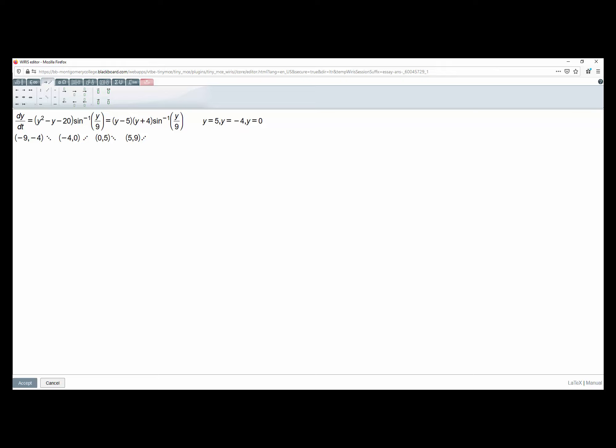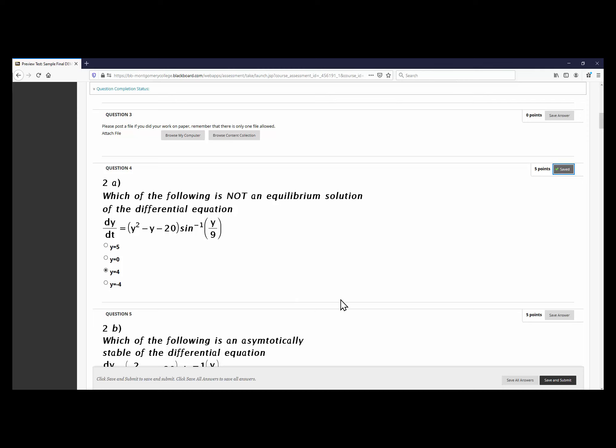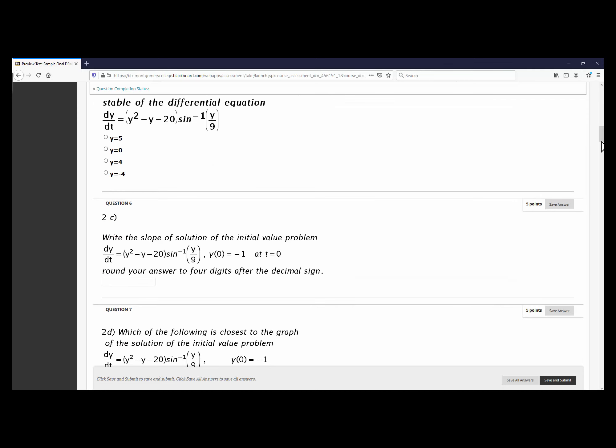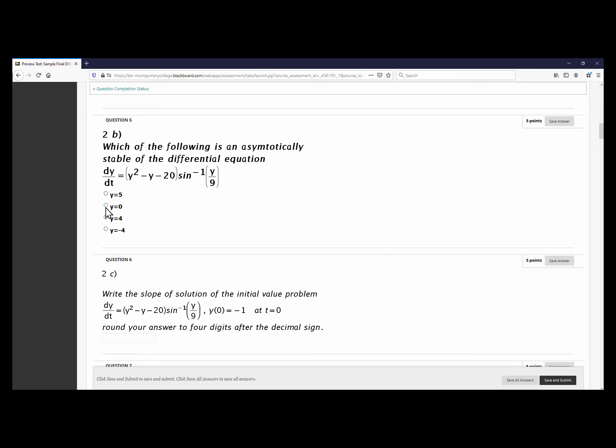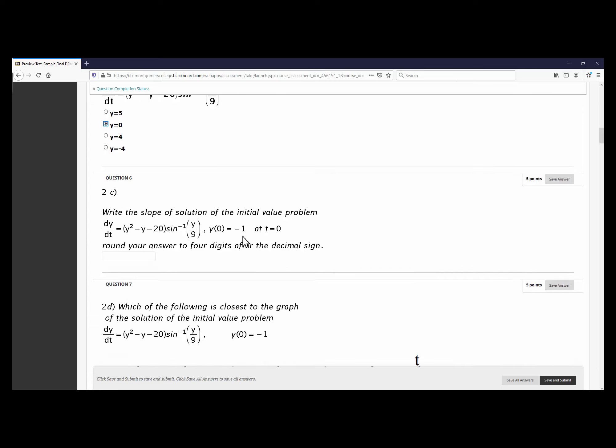So what our answer to the next part will be, it says, which one is an asymptotically stable solution? That is y equals 0. And then it asks you to do this, that if y 0 is negative 1, then we have to write the slope of the solution of the initial value problem. Of course, here the answer is written, and we just have to substitute. That is, y at 0 is negative 1. And that we have to do at t equals 0.